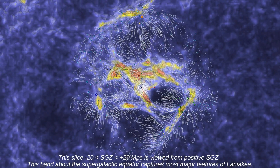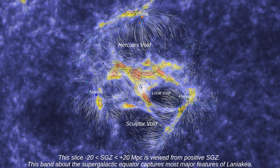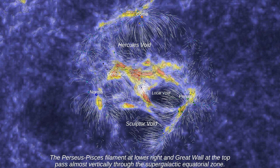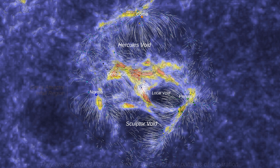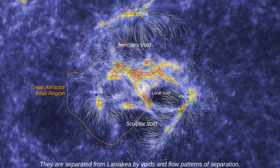This slice — minus 20 less than SGZ less than plus 20 megaparsec — is viewed from positive SGZ. This band about the supergalactic equator captures most major features of Laniakea. The Perseus-Pisces filament at lower right and Great Wall at the top pass almost vertically through the supergalactic equatorial zone. They are separated from Laniakea by voids and flow patterns of separation.